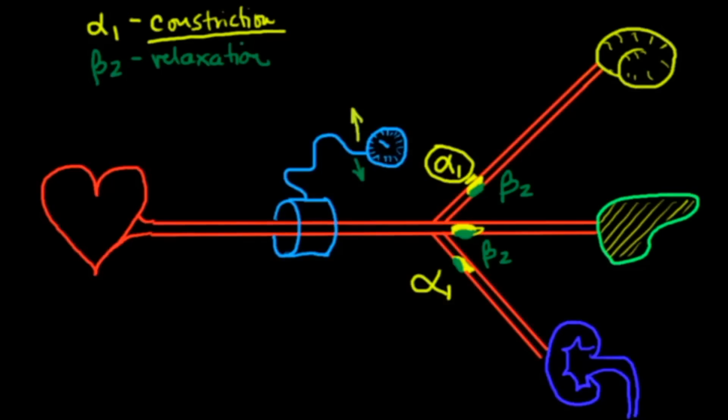The first thing that you have to understand is the layout of the circulatory system. Here we have the heart. The heart pumps blood out through arteries, and here we have the brain, here we have the liver, and here we have the kidney.